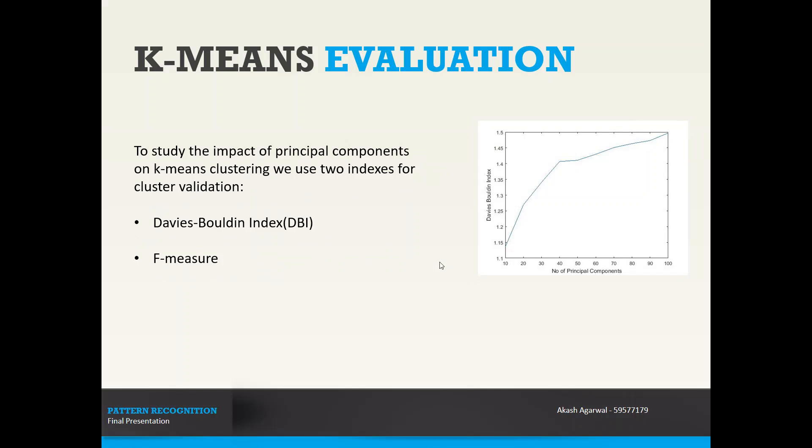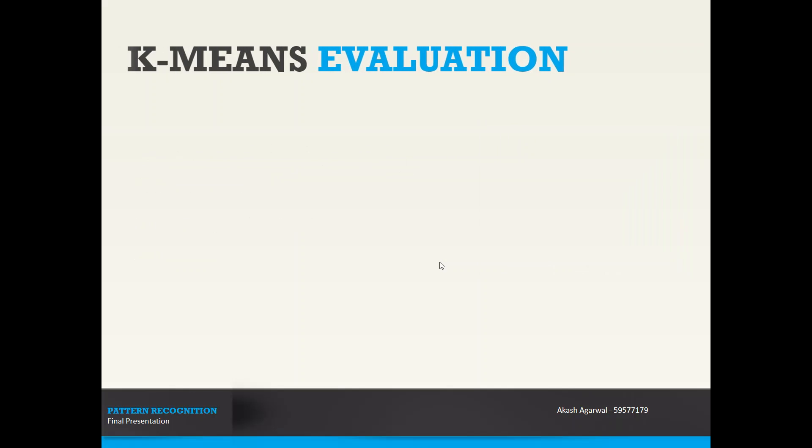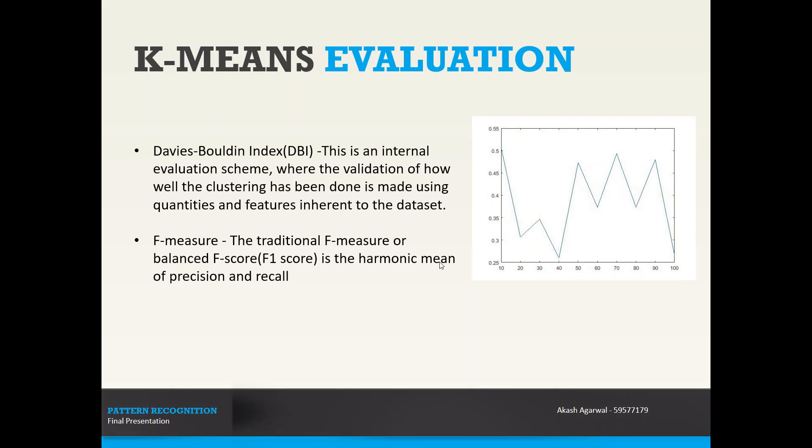If we take a look at the previous slide, here we see the comparison chart of Davies-Bouldin index by taking different values of the principal components. When we have 10 principal components, Davies-Bouldin index produces the best result. And in the case of F-measure, even here we see that with only 10 components, we are able to get the highest value for our F-measure, which results in the best performance.